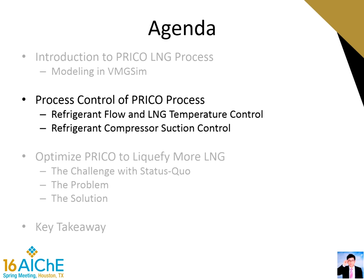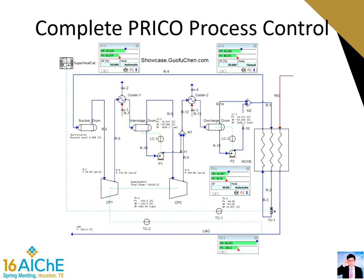Now we move to the process control of the pre-co process. Two major control loops will be particularly discussed: the first is the refrigerant flow and LNG temperature control, and the second is the compressor suction control. Four control loops are modeled in total. TC1 is used to control the compressor suction. TC2 is used to control the LNG outlet temperature. LC1 and LC2 are used to control the liquid level in the interstage drum and discharge drum. Notably, there is no compressor discharge pressure control — the compressor discharge pressure is self-balanced in this cycle. There may also be two additional controllers to control the outlet temperature of the two coolers.